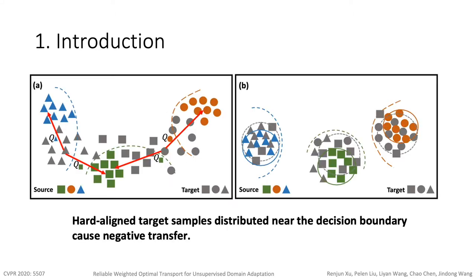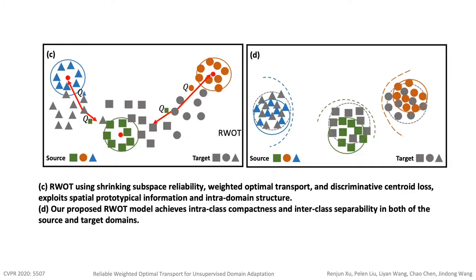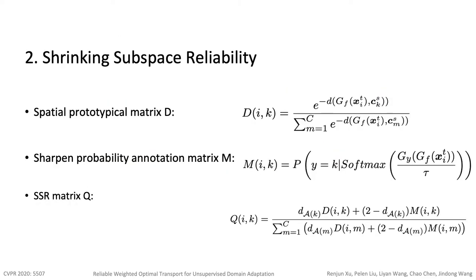Figures A and B show hard-aligned target samples distributed near the decision boundary could easily cause negative transfer. Figures C and D demonstrate AWOT. The AWOT model includes three components.